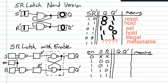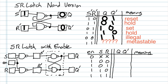We just finished the SR latch NAND version and we're now going to do the SR latch with enable. This dotted box section down here represents what we just did above, with S and R inputs and S prime, R prime outputs. When we look up Q, we don't have to re-analyze the circuit — we can just look up here to find the Q values. This is a bottom-up style design, also called object-oriented, where you keep adding new features onto a base design.